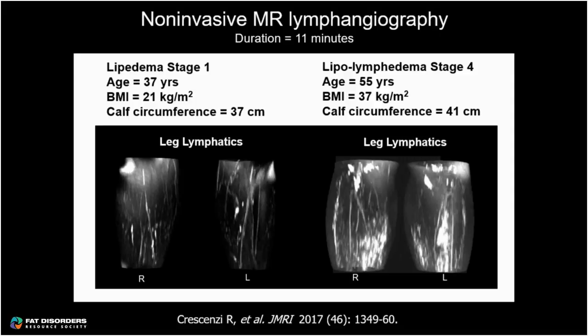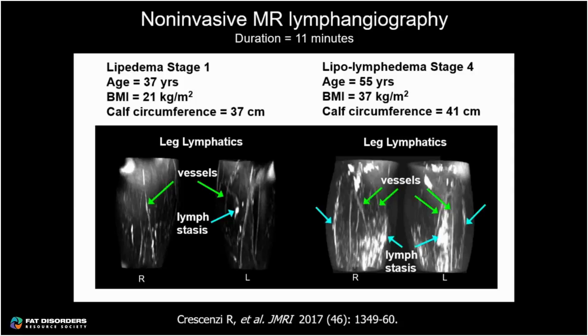These are examples of non-invasive MR lymphangiography using MRI from a stage one patient with lipedema and a patient with lipolymphedema characterized by pitting edema, acquired below the knee down through the ankle. The green arrows point to vessel structures — there are more visible in the patient with additional lymphedema. The blue arrows point to pockets of fluid stuck in the tissue, consistent with lymph stasis, which becomes a cloudier appearance of signal in advancing lipolymphedema. These images were acquired in 11 minutes without contrast agent.